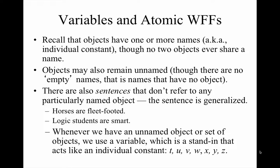Consider examples like 'Horses are fleet-footed' and 'Logic students are smart.' We're not talking about a specifically named horse like Mr. Ed, nor a specifically named logic student like Kalinda. Instead, we're talking about the domain of discourse involving horses and fleet-footed things, and logic students and things that are smart. These are unnamed entities. Common variables are T through Z — most commonly X and Y — but you can use others too.